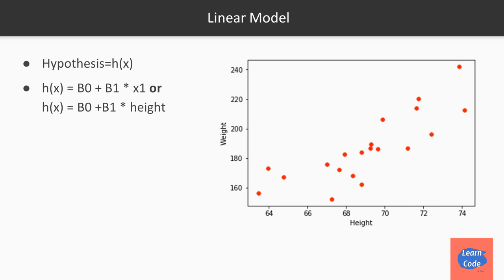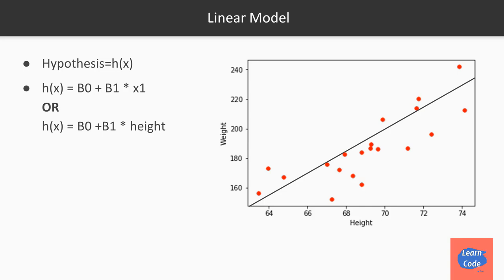Looking at the dataset with height on the x-axis and weight on the y-axis, we can see that the relationship between weight and height is fairly linear. To predict weight, we try to fit a line represented by the equation b0 + b1 * height. If the line crosses through the origin, b0 is 0 and the line is entirely represented by b1 * height. However, this may not be a perfect fit — there will be points that the line doesn't cover well, creating distance between certain points and the line.